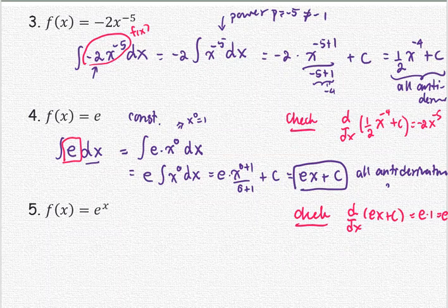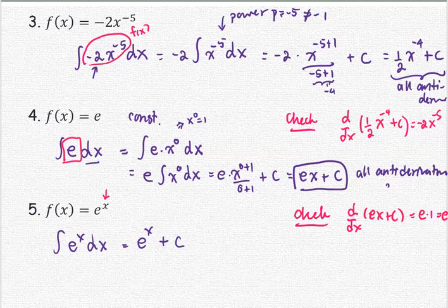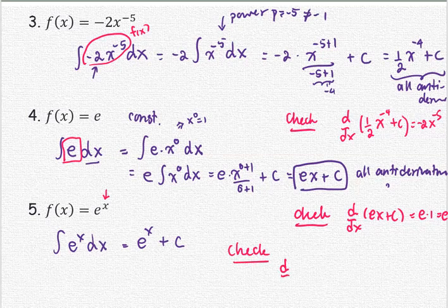The last example: f(x) equals e to the power x. This is an exponential function with x involved. The integral of e^x with respect to x, or all antiderivatives of e^x, is simply e^x plus C — the family of antiderivatives. We can check by finding the derivative of e^x plus C, which returns e to the power x as well.